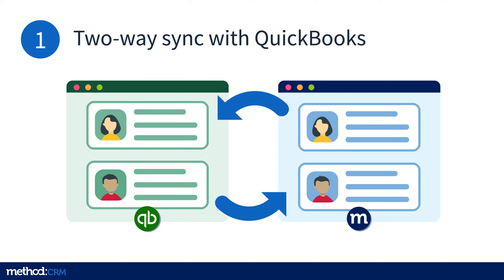Method solves this by introducing a real-time sync with QuickBooks. This is a real-time two-way automatic sync. Updates you make in QuickBooks will be seen in Method, and updates you make in Method will be seen in QuickBooks. This is done without your intervention, and it is available for both the online version of QuickBooks as well as the desktop and enterprise version.